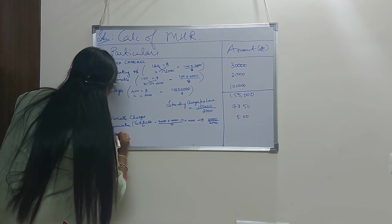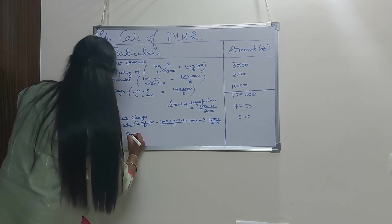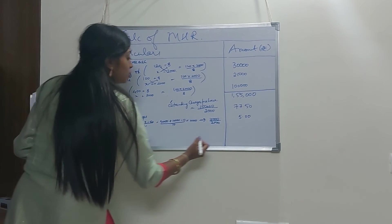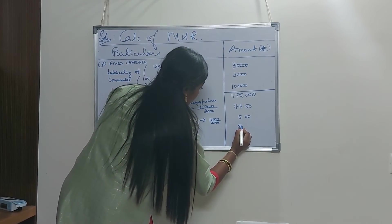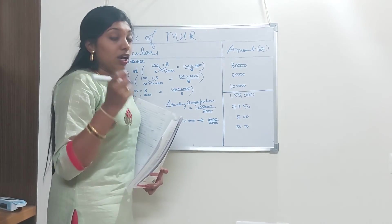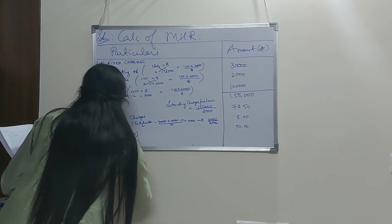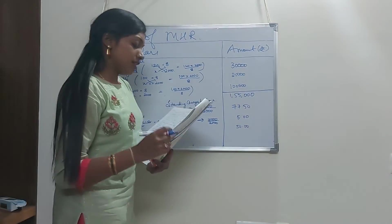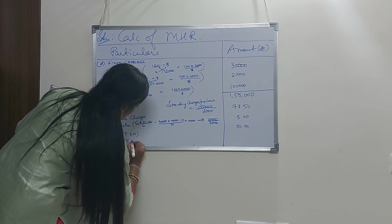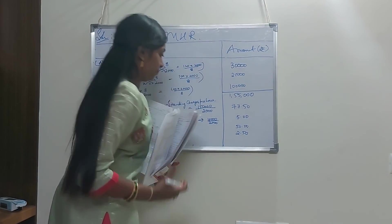For power, the rate is 5 rupees per unit and the machine consumes 10 units per hour, so power cost per hour = 10 × 5 = 50 rupees. For repairs, it is specified as 50% of depreciation. Depreciation per hour is 5 rupees, so repairs = 5 × 50% = 2 rupees 50 paise.